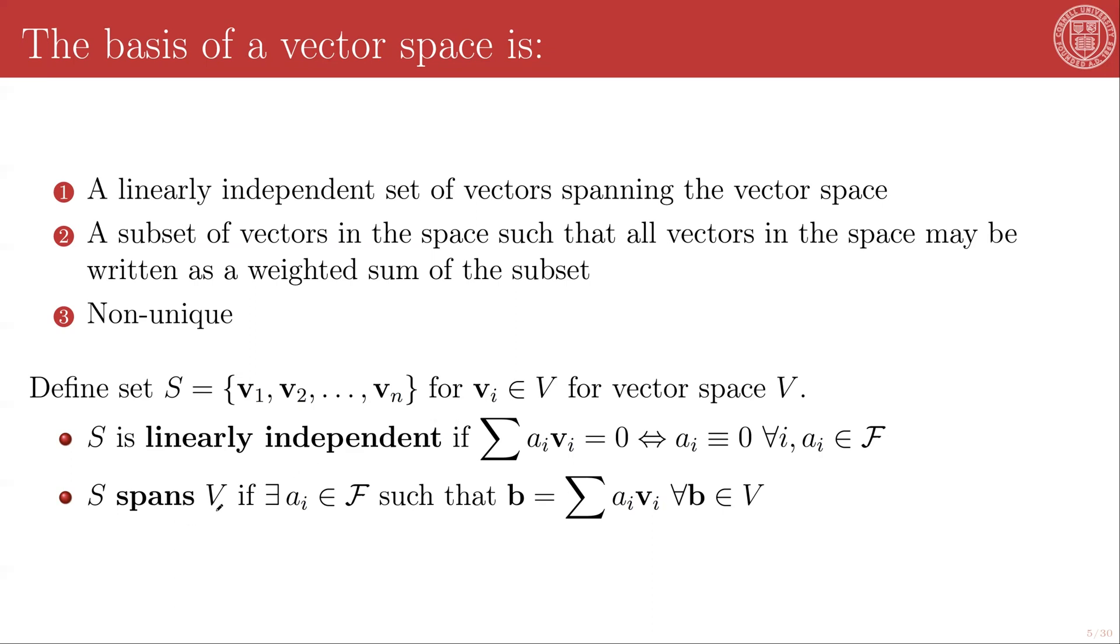And S is set to span V if there always exists a set of scalars in the field that the vector space is defined over, such that for any other element b of the vector space V, I can write b as a weighted summation of this set. And so that is a spanning set. I can express every single element of my vector space as a summation of this set weighted by some scalar measure numbers.